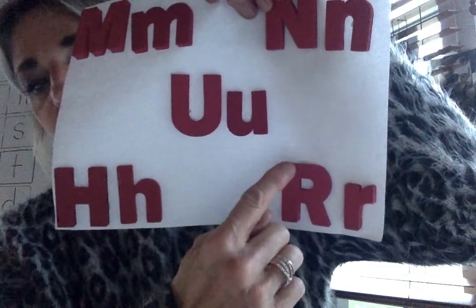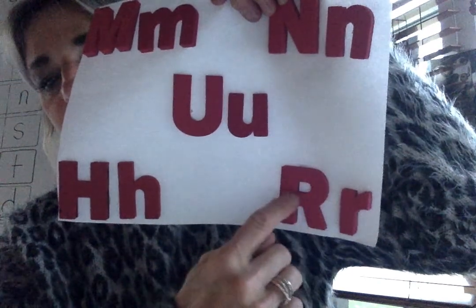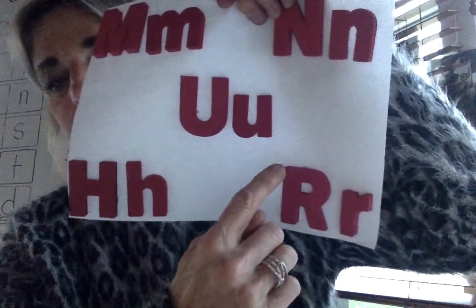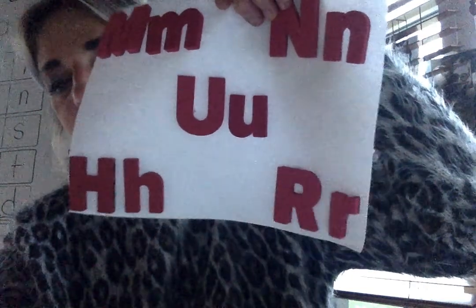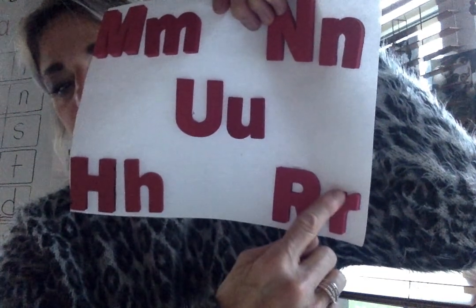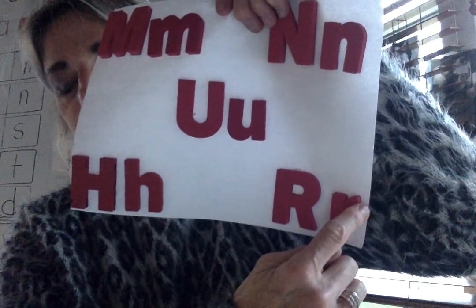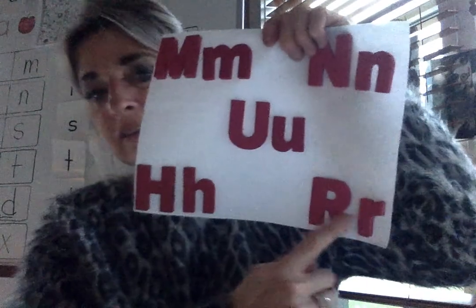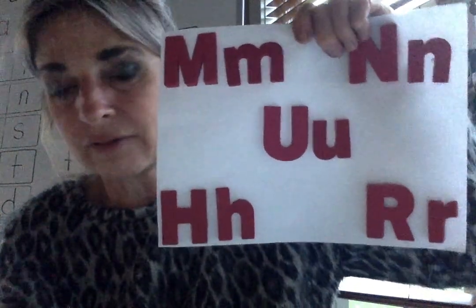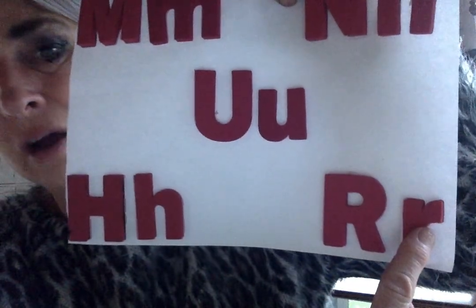This is the R, capital R: one line down, curve around, kick out. Lowercase R: one line down and that little bitty curve. This letter does not look like this letter at all, but they are both R's. This is the uppercase R and lowercase R.